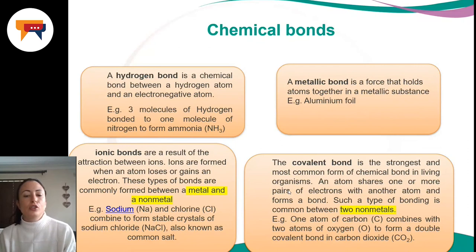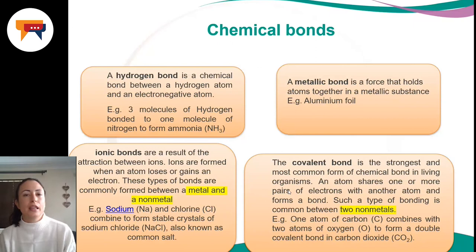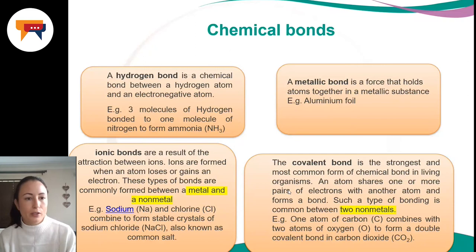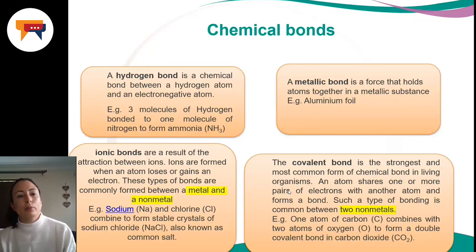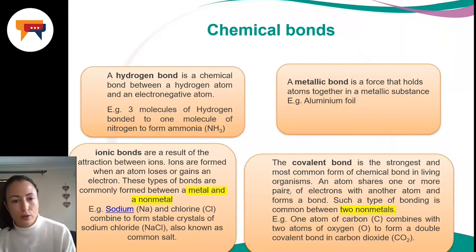The four most important chemical bonds are: a hydrogen bond, an ionic bond — note it is ionic, not 'lonic'; the capital I can look like a small l in the study guide — a metallic bond, and a covalent bond. A hydrogen bond is a chemical bond between a hydrogen atom and an electronegative atom. For example, three molecules of hydrogen bonded to one molecule of nitrogen form ammonia via a hydrogen bond.